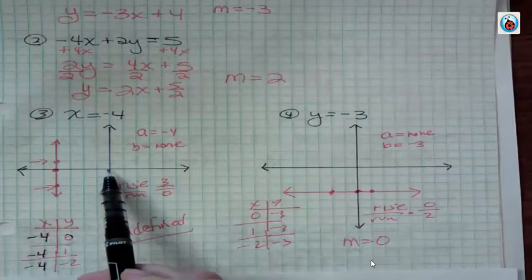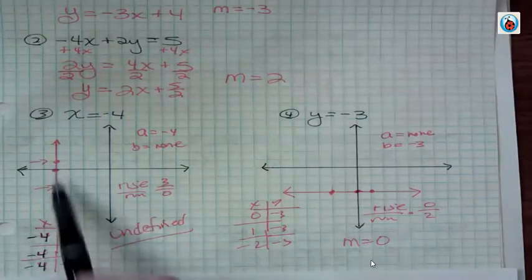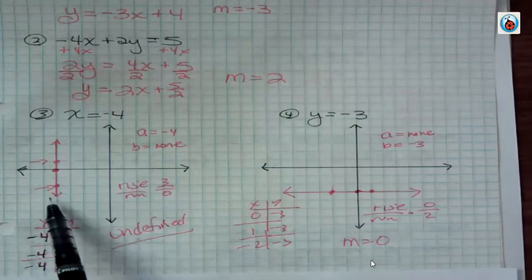So we have negative 4, 0, negative 4, 1, negative 4, negative 2. We have all these points that line up to make a vertical line.